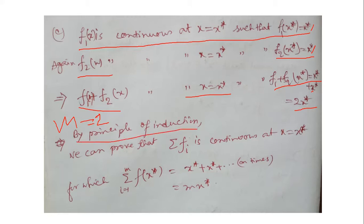So the formula holds for m = 2. For m = 3 and beyond, it can be shown by the principle of mathematical induction that Σfᵢ is continuous and there exists x* such that Σfᵢ(x*) = m·x*, for f₁, f₂, up to fₘ. This is the solution.